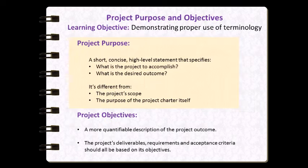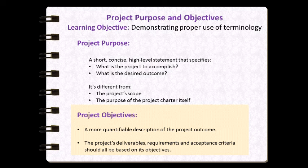The first two topics that you will encounter in the project charter are the project's purpose and scope sections. In these sections, the learning objective is to ensure that you demonstrate the proper use of project management terminology and that you can apply it appropriately to your project. The project purpose is a high-level, short, concise statement that describes the desired outcome for the project and what benefits will be derived from conducting the project. Keep in mind, you are describing the purpose for the project and not the purpose for the charter itself. The project objectives are based directly on the project purpose and should describe the project's outcome in a more quantifiable and measurable way, worded clearly enough that the project deliverables, requirements, and acceptance criteria can all be derived from them within the planning phase.